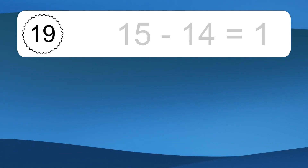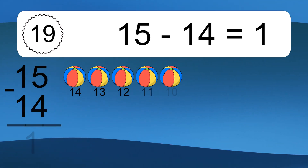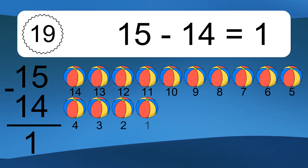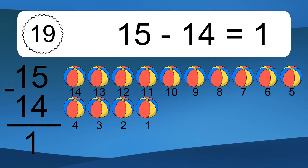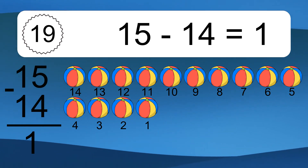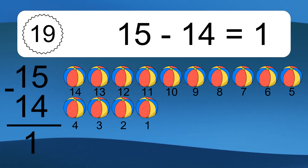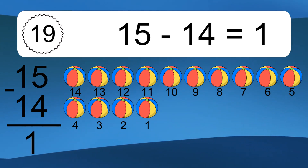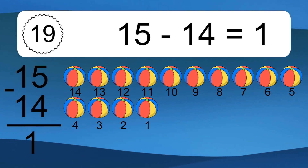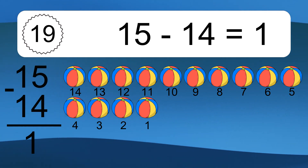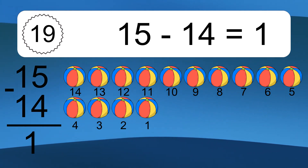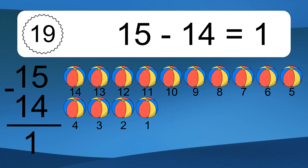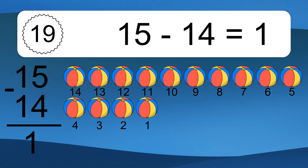15 minus 14 equals what? 15 minus 14 equals 1. Let's count it. 14, 13, 12, 11, 10, 9, 8, 7, 6, 5, 4, 3, 2, 1.